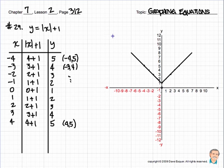And that's what my graph is going to look like. Number 29, y is equal to the absolute value of x plus 1. The graph ends up looking like a straight line coming down and then a straight line coming up.